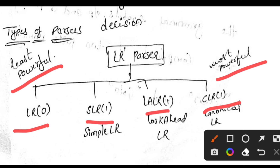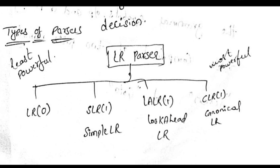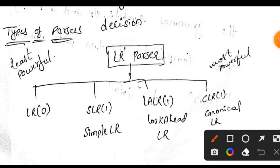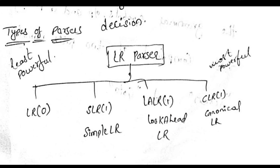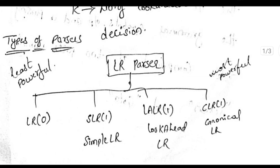In LR(0), L represents left-to-right scan, R represents rightmost derivation in reverse, and 0 represents the lookahead item. SLR(1) stands for Simple LR. LALR(1) stands for Lookahead LR. And CLR(1) stands for Canonical LR. These are the four types of LR parsers, from least powerful to most powerful.